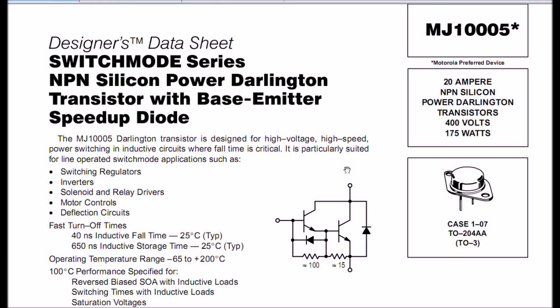Let's look at the specification sheet on an MJ-1005. This particular Darlington, this thing can handle 20 amps. But, let me note one thing right off the bat. This is not something you use in an audio amplifier. It is designed specifically for switching regulators, inverters, solenoid and relay drivers, motor controls, deflection circuits. It is designed to drive high-speed inductive circuits, not audio amplifiers.